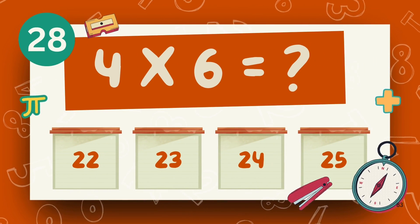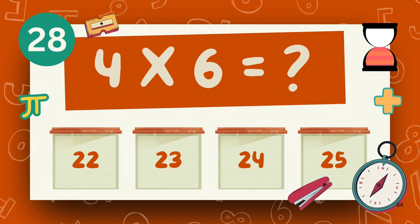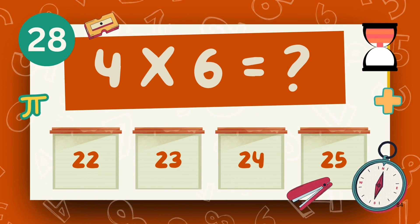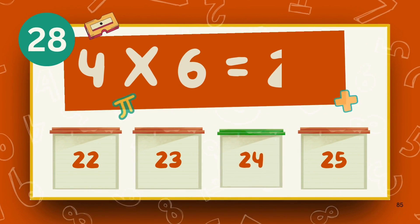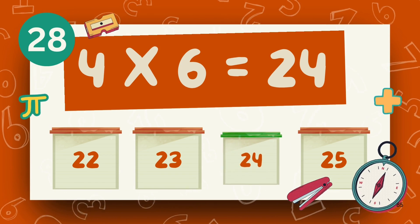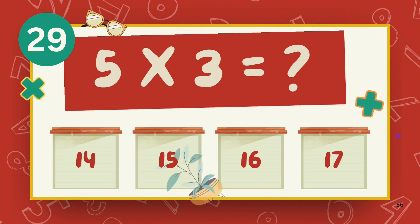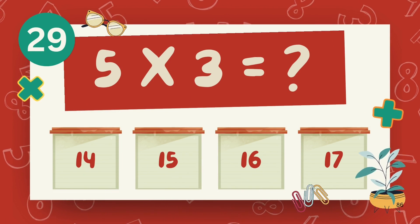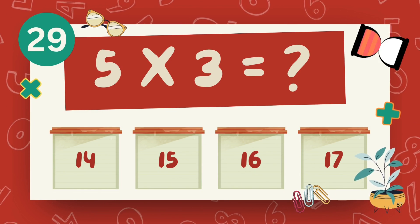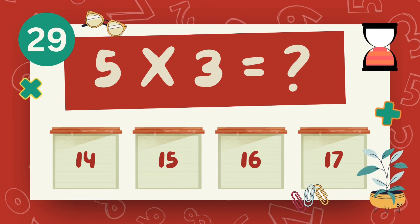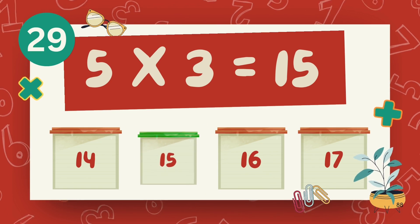What is 4 multiply 6? The answer is 24. What is 5 multiply 3? The answer is 15.